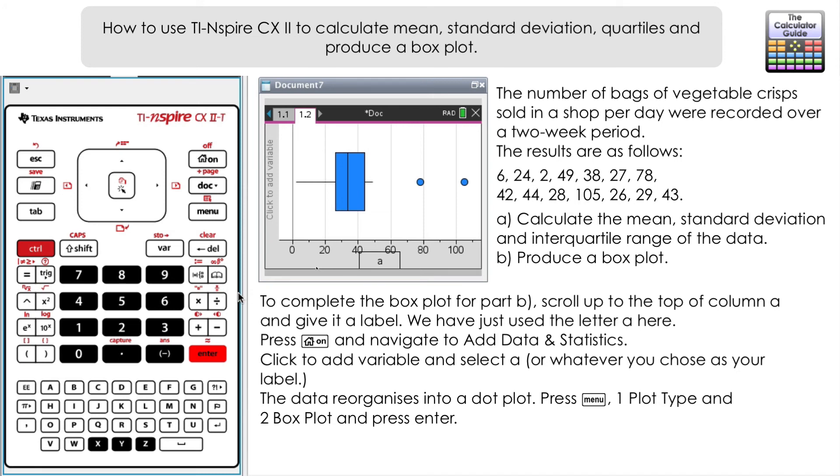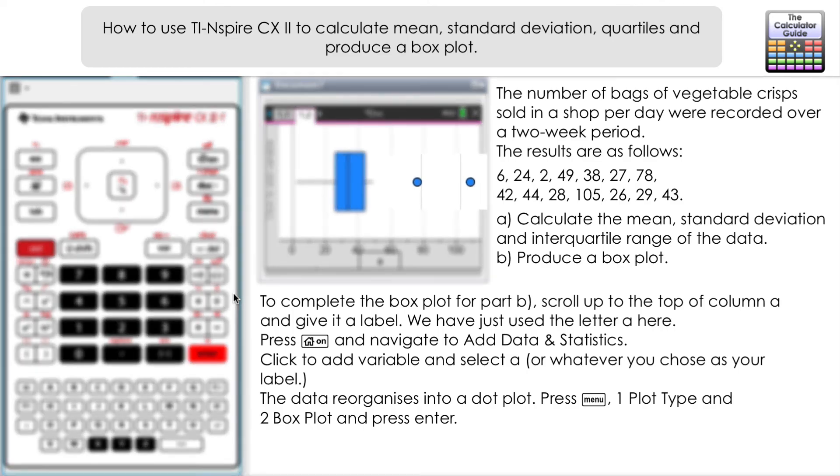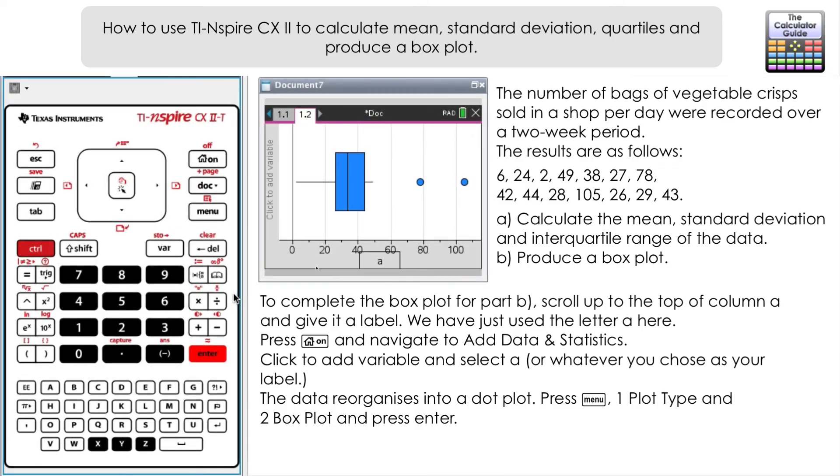It should automatically realign as a box plot and here it is. We've got a box plot represented there. You can see the three quartiles in the box. It's also identified some outliers for us as well. Some outliers—that looks like it's going to be 78 and 105. You can use the touchpad to identify those if you weren't sure, but they are the two highest values and they're quite exceptionally high compared to the other results.